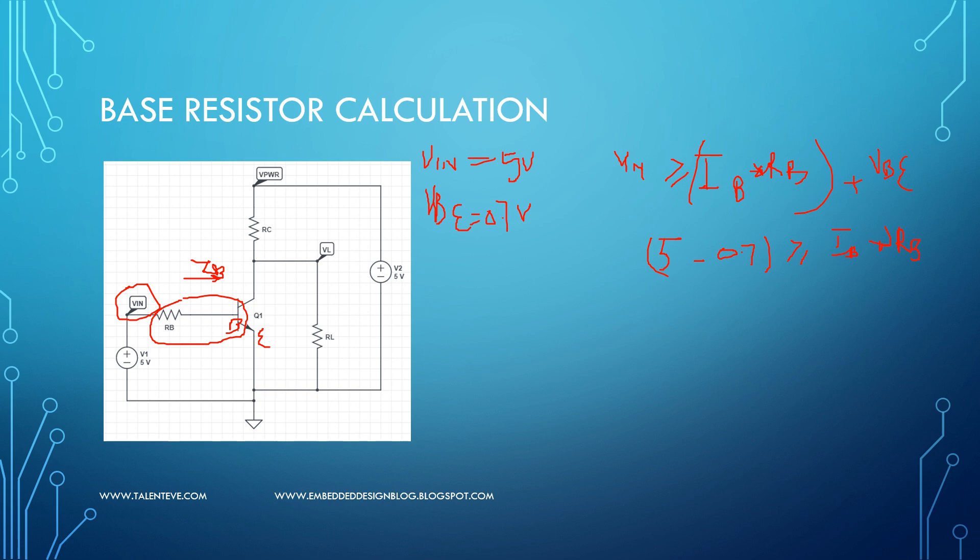So now IB depends on the amount of current drawn by this. We know this is IC, right. So we know the relation also, IC is equal to beta into IB, right, which where IC can also be calculated by using the V power.